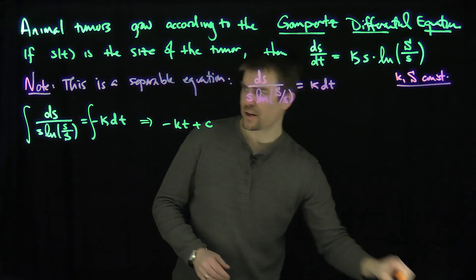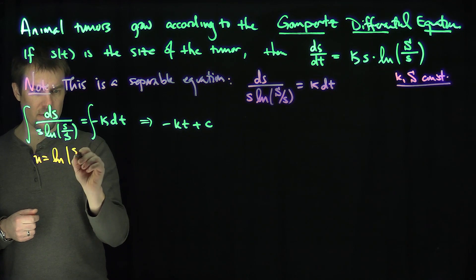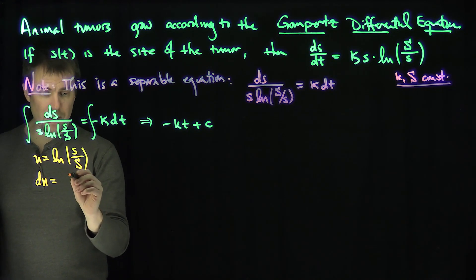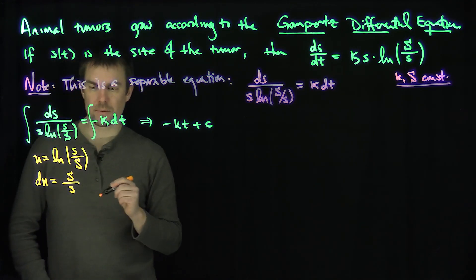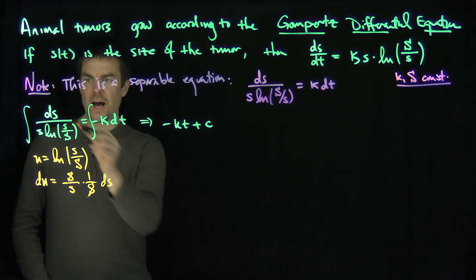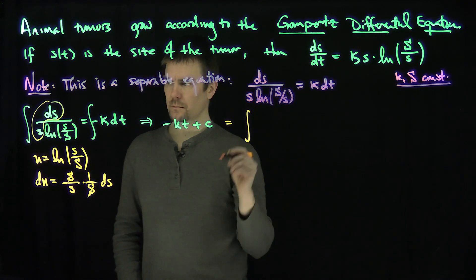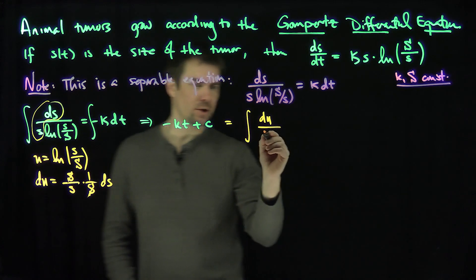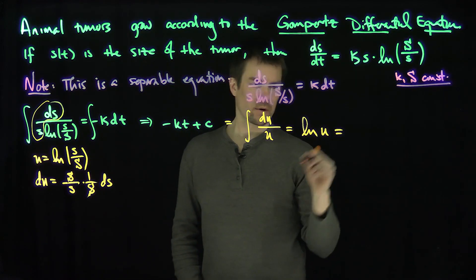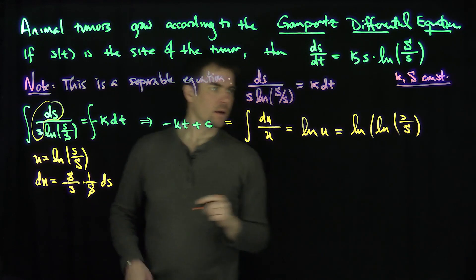For the left-hand side integral, I'll use the substitution u = ln(s/S capital). Then du = (S capital / s) · (1/S capital) ds = ds/s, so ds/s = du. The integral becomes ∫ du/u, which gives the natural log of u. Substituting back, that's the natural log of the natural log of s over S capital.